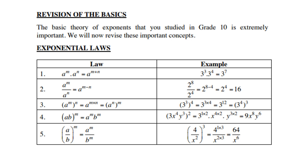Law number 4: (a times b) to the power m — you can distribute the m into the bracket, giving a to the power m times b to the power m. For example, (3x to the power 4 times y to the power 3) to the power 2. Be careful — the 3 becomes 3 to the power 2, because you multiply 2 with the exponent 1 of the 3. Then 2 times 4 for x and 2 times 3 for y. That gives 9x to the power 8 y to the power 6.